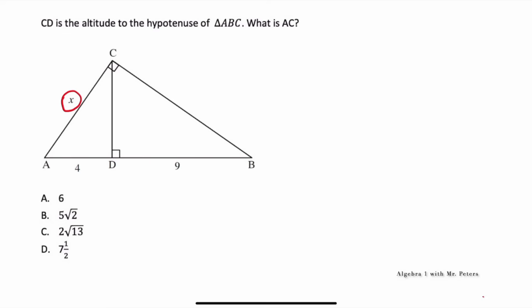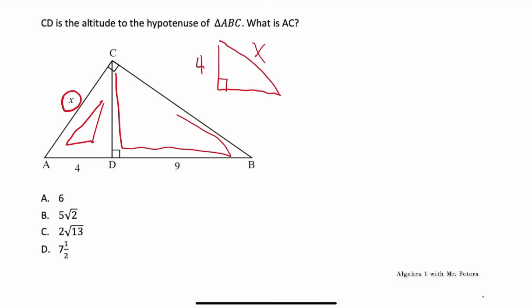So we're solving for X, and the best way to do this is to draw a diagram, because there are about three different triangles, and this is probably the best way to solve this. When we look at the smallest triangle, which is this one right here, we have four for the short leg and X for the hypotenuse. Then we go over to the larger triangle, or the second largest triangle, and we notice that all we have is just the long leg of nine.